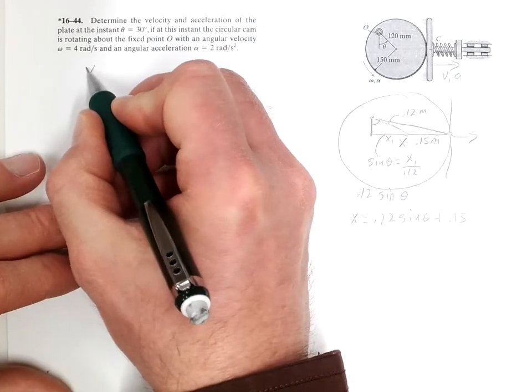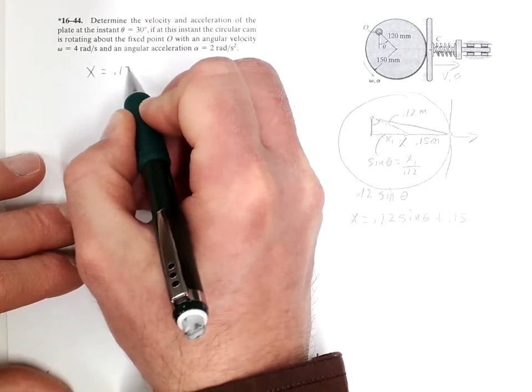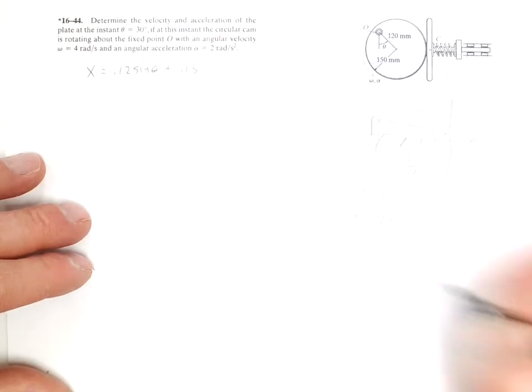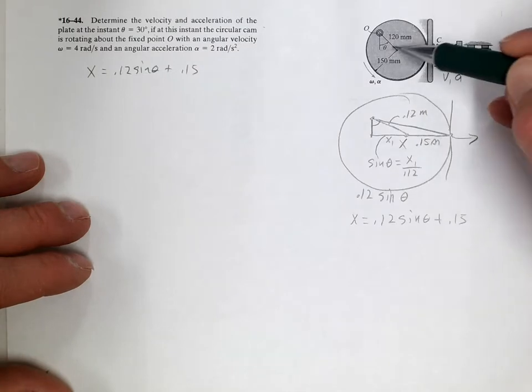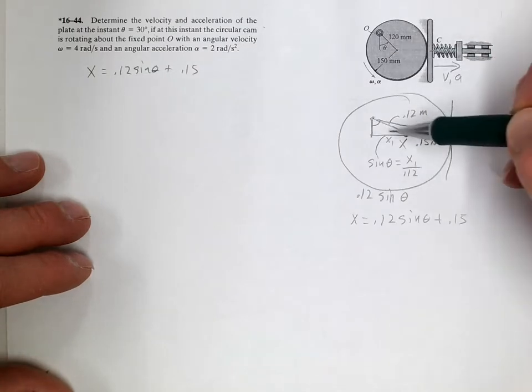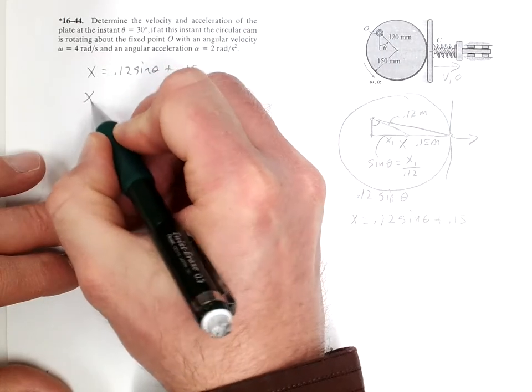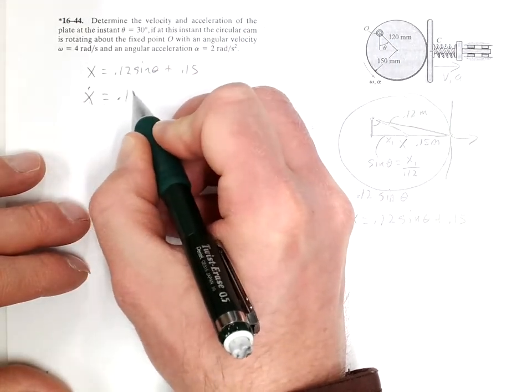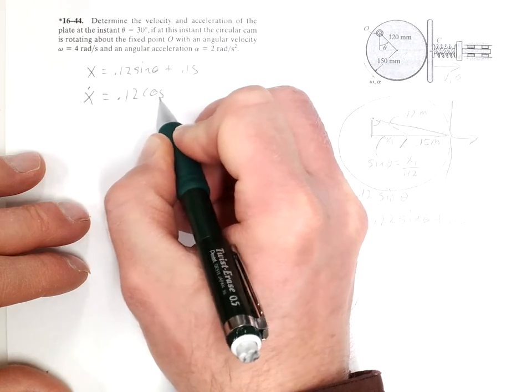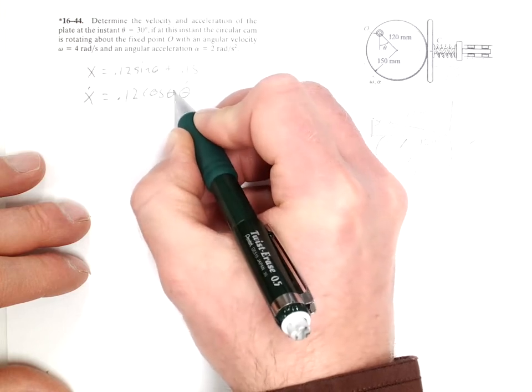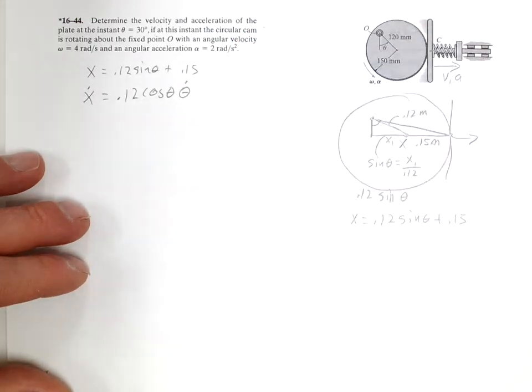Okay, so if we start with that as the equation, X equals 0.12 sine theta plus 0.15, that is the distance here. So the rate at which that distance is changing as it turns is the velocity of what's pushing it back. So let's take the first derivative with respect to time. And we get 0.12 cosine theta and applying the chain rule, theta dot. And the 0.15 is just a constant and it goes away.